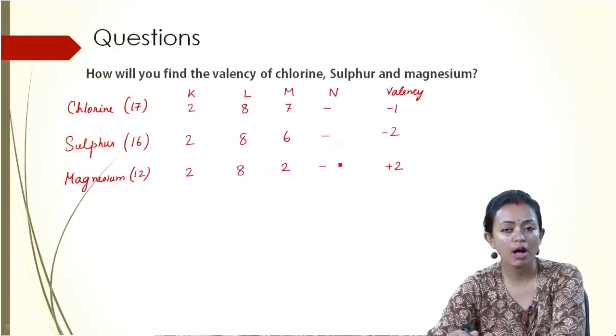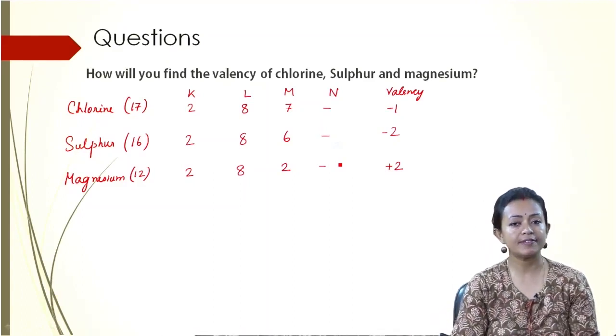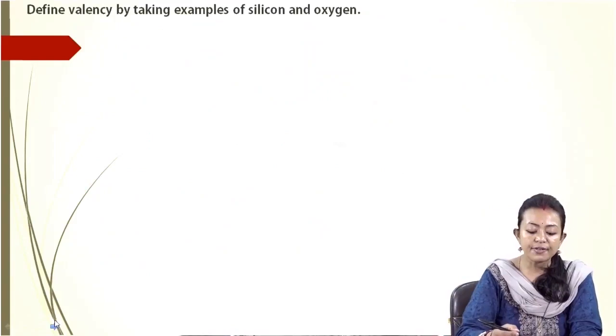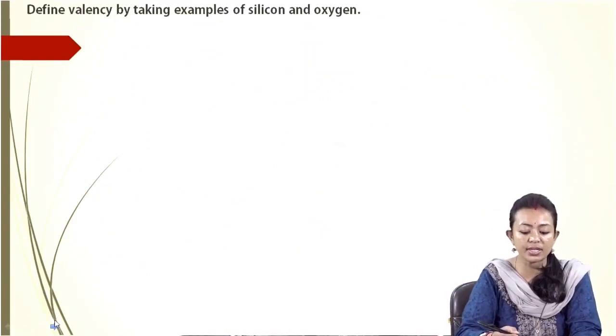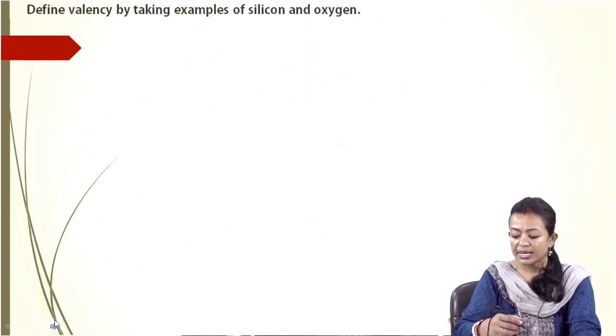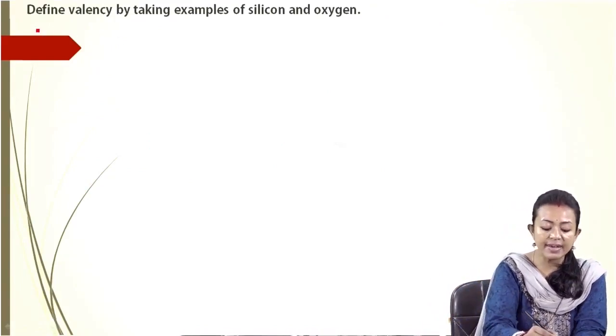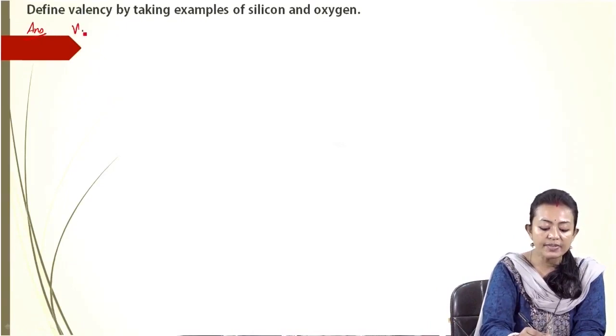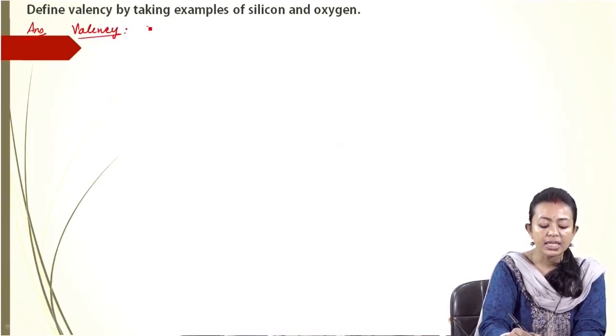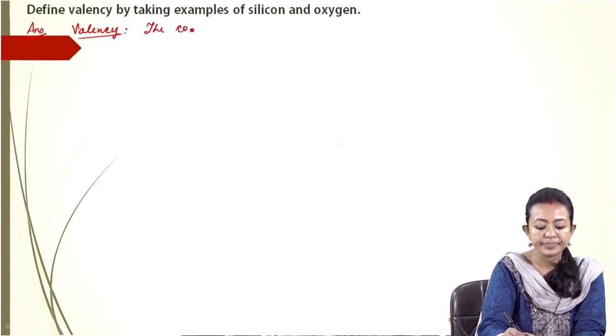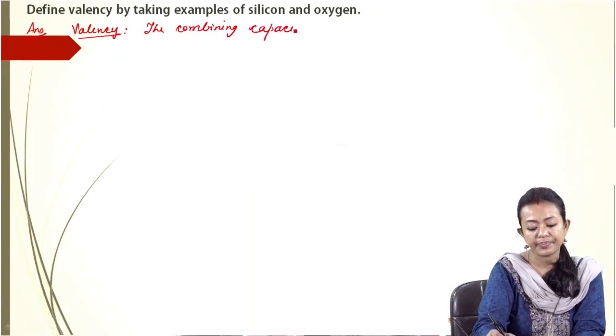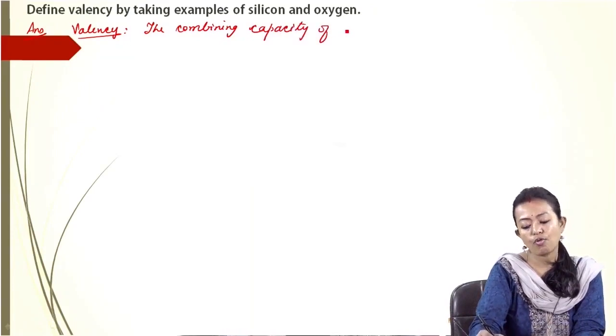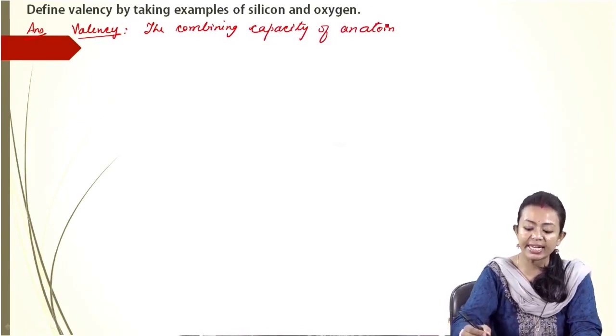I hope this is clear how you need to find out the valencies of different elements. Define valency by taking examples of silicon and oxygen. Now in case of that, what is valency? Valency is the combining capacity. Valency is termed as the combining capacity of an atom, which takes place with the help of electrons.